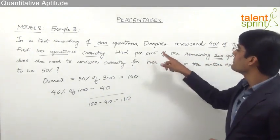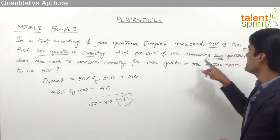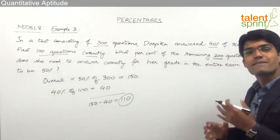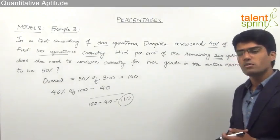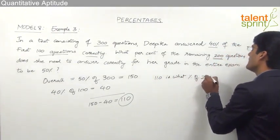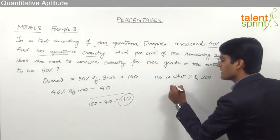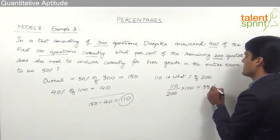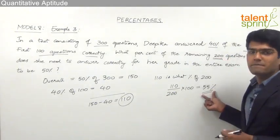We need to find what percent of the remaining 200 questions she needs to answer correctly — that is, 110 is what percentage of 200. Using the formula x is what percent of y = (x ÷ y) × 100, we get 110 ÷ 200 × 100 = 55%. So she needs to answer 55% of the remaining 200 questions correctly.